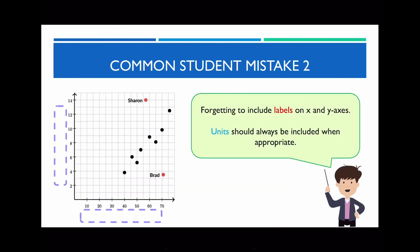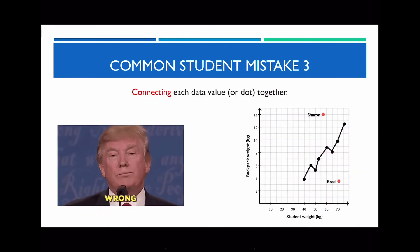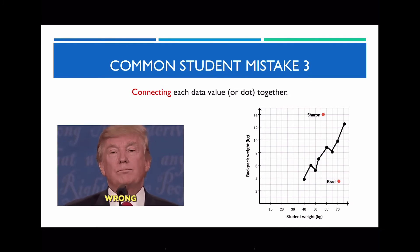The second common mistake is that students often forget to label their x and y-axis, and you're always going to be missing out half a mark each time. This is cumulative because there are generally a lot of scatter plots on your test. Always check back on your drawings to see that you've labelled your x and y-axis, and units should always be included if appropriate. The third common mistake is that students often connect each data point together, which is incorrect because this is no longer going to be a scatter plot anymore.